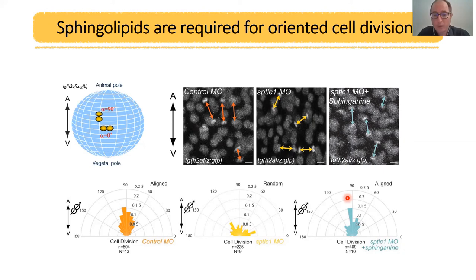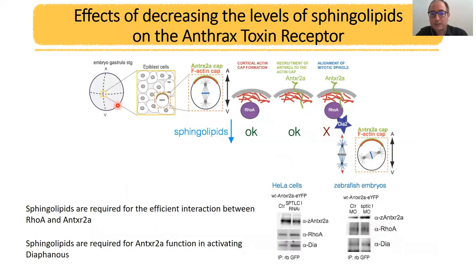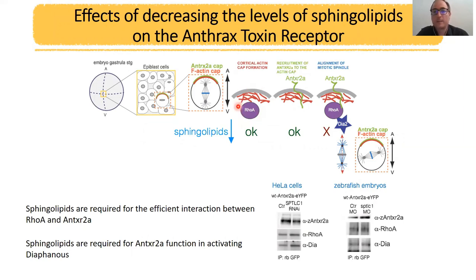If you inject sphinganine, the first sphingoid base produced by the de novo pathway, you can rescue this phenotype and divisions are aligned again in the rescued embryos. So sphingolipids are indeed important for oriented cell division. But is this randomization simply because sphingolipids are essential and these cells are just messed up? As Irinka characterized all the steps in the oriented cell division process, we could go step by step and check which step is affected. In fact, the actin cap forms just fine — the activity of RhoA is not affected, and we have a cortical actin cap. The anthrax toxin receptor is normally recruited to the actin cap, so the anthrax toxin receptor cap forms normally.